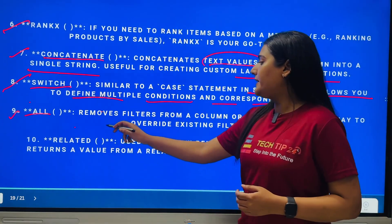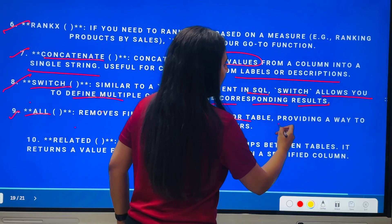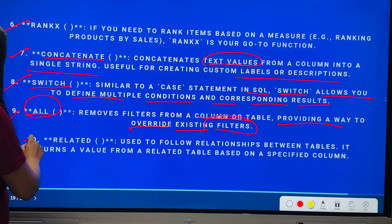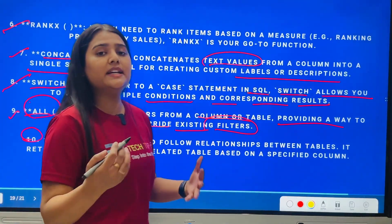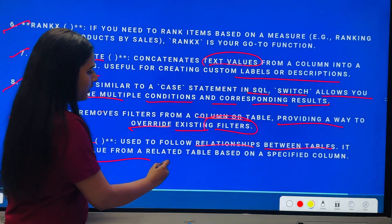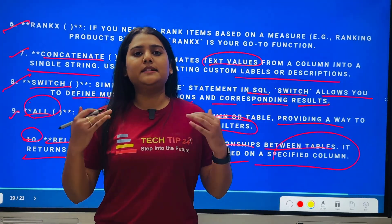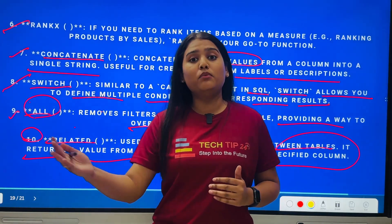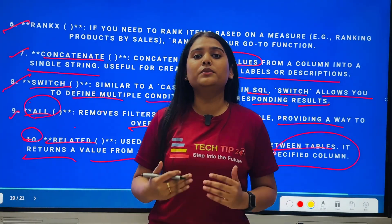The ninth function is ALL. ALL removes filters from a column or table, providing a way to override existing filters — that's the key characteristic of ALL. The tenth function is RELATED, which is used to follow relationships between tables. RELATED returns a value from a related table based on a specified column. Some DAX functions work with tables, some with measures, some with columns, and some with specific data types — you need to be clear on which function is used in which scenario.